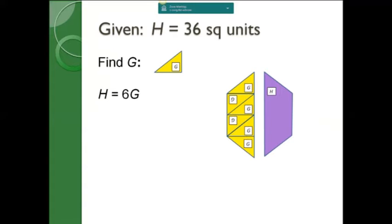After we see that H is equal to 6G, we can substitute in 36 for H and quickly solve for G. And at the end, after we've done the work, we want to make sure units are clearly labeled in the solution.